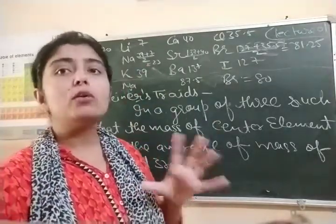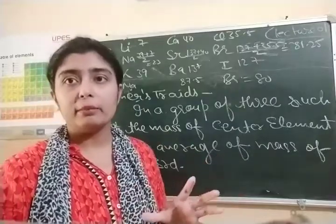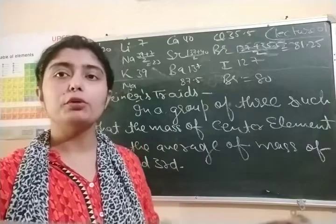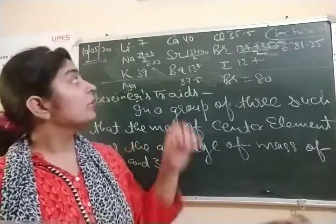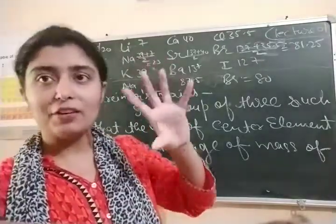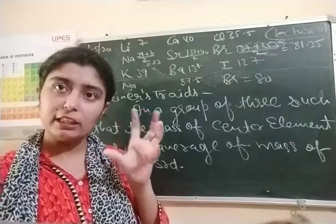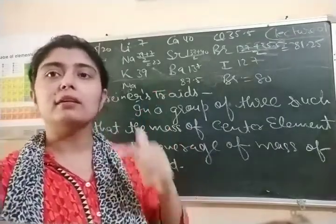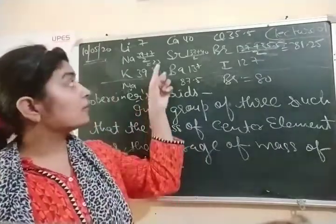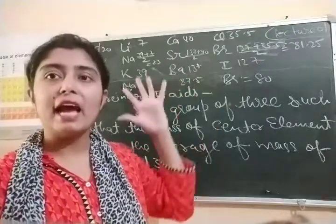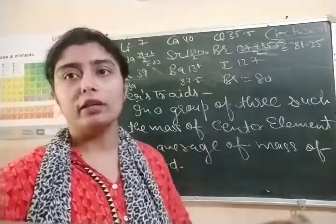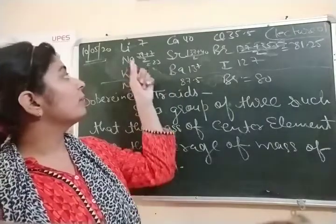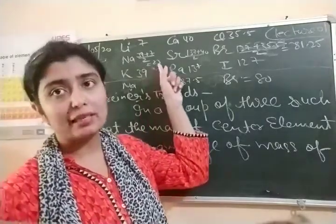According to him, all elements in the periodic table would be present in groups of three. The mass of the first and third elements would give the mass of the middle element. By taking the average of the first and third. For the calcium-strontium-barium group: calcium's mass is 40, barium's mass is 137. Taking their average gives approximately 88.5.